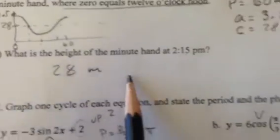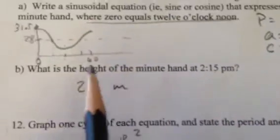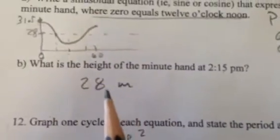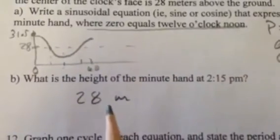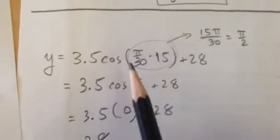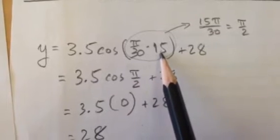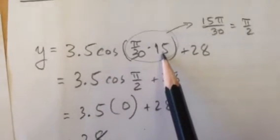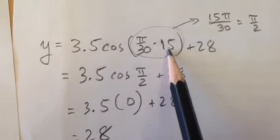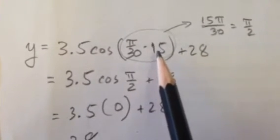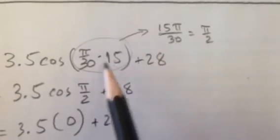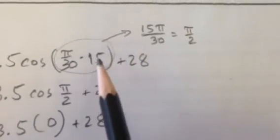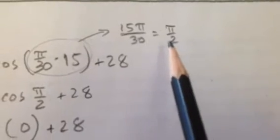The next part says what is the height of the minute hand at 2:15, which is at the quarter hour. And you can sort of figure, well, that's it. We're at the quarter at 3. So it's going to be at the same height as the center of the clock. It's 28 meters. But you could do this other thing where you plug it in. Here's our equation. And if I plug in 15 for x at 15 minutes, 2:15, that's 15 minutes after the hour. So it's like x equals 15. Now, if I plug that in for x right here, pi over 30 times 15. This thing right here, pi over 30 times 15, gives me actually pi over 2. If I multiply that out.